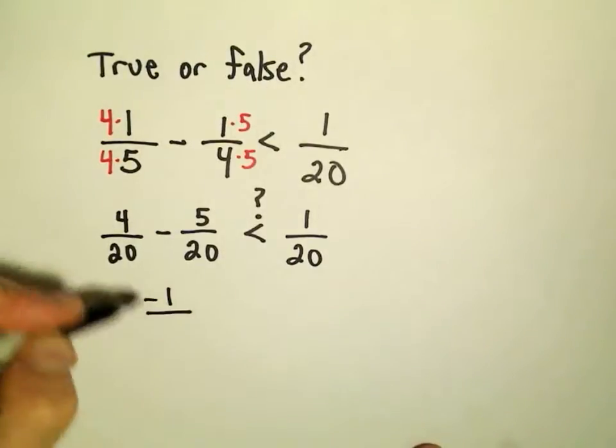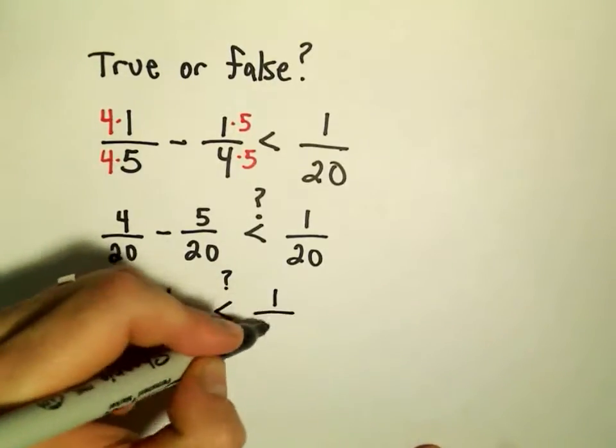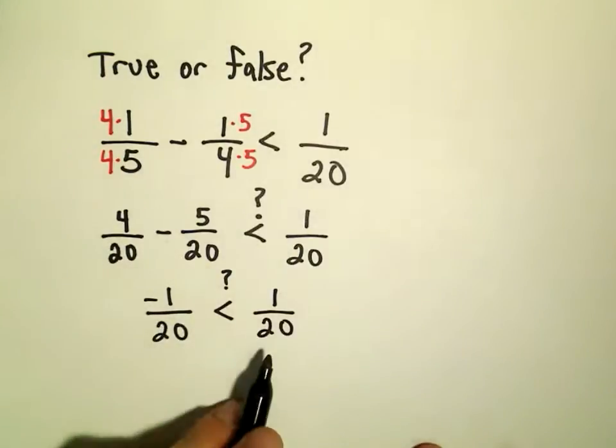4 minus 5 is a negative 1. Again, we don't do anything with the denominator. So I'm thinking, is negative 1 over 20 less than positive 1 over 20?